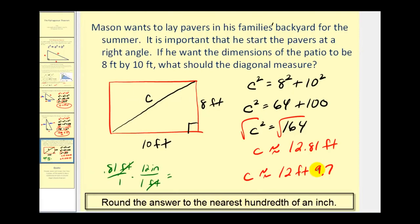So C is approximately 12 feet, 9.72 inches. .72 is very close to .75, which would be 3 fourths of an inch.